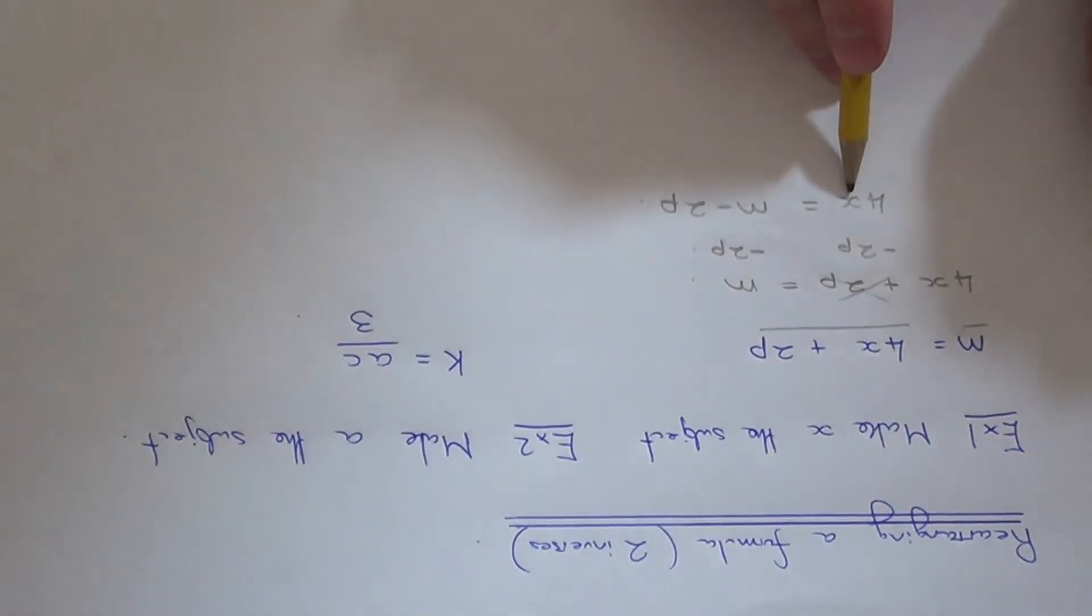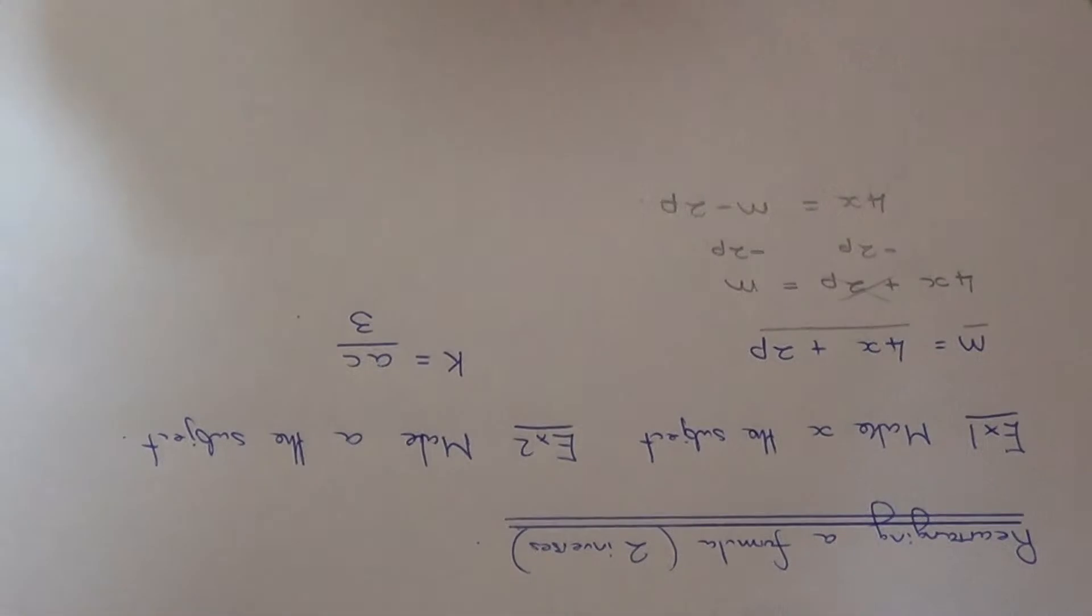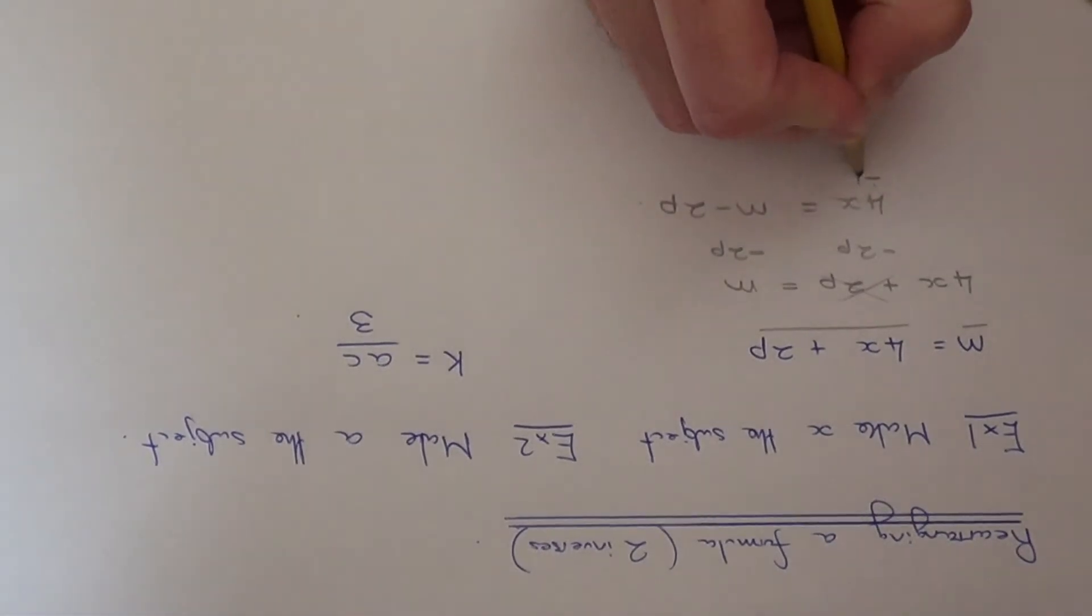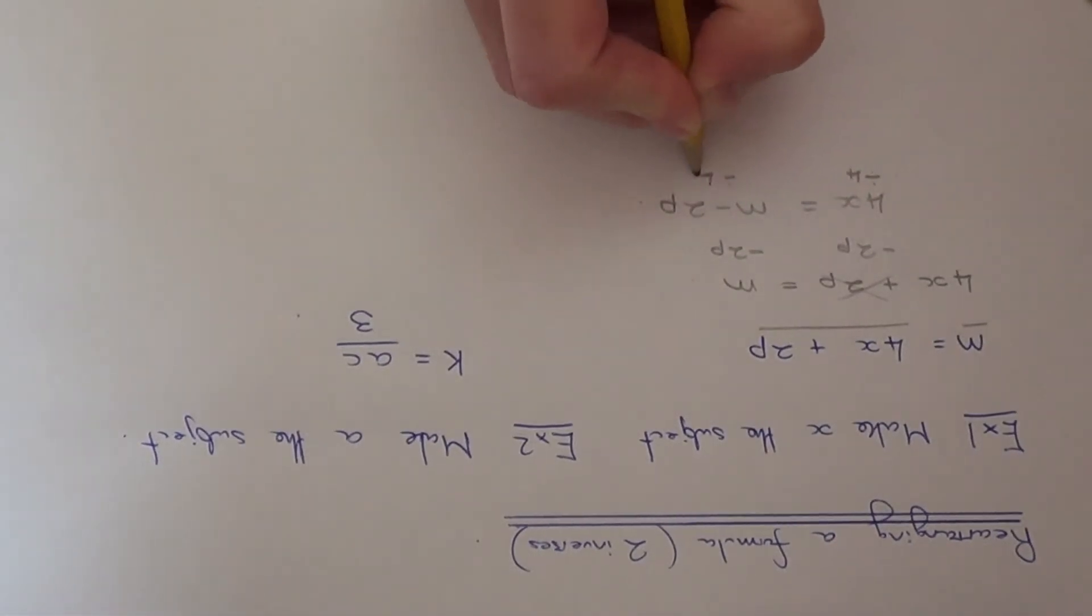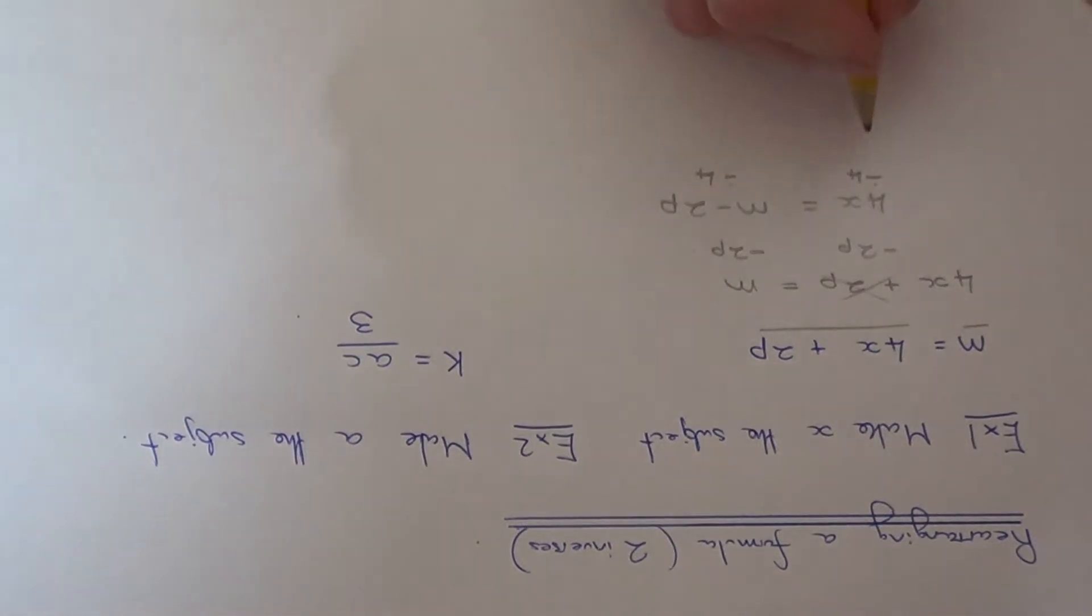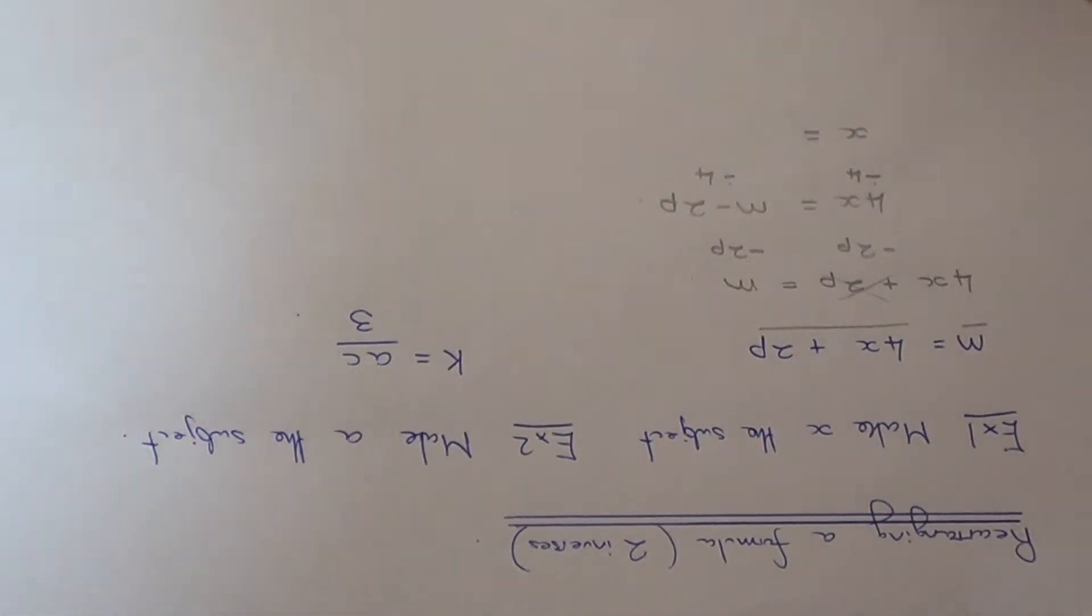Finally, we just need to get rid of the 4. x is being multiplied by 4, so if we do the opposite which is to divide by 4, that will get rid of the 4 off the left hand side and leave us with x.